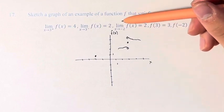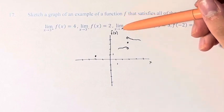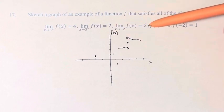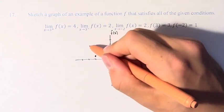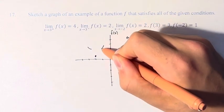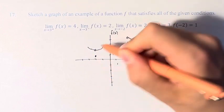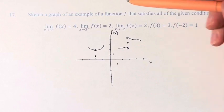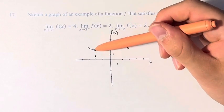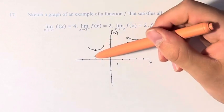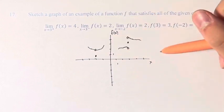We also have that the limit of the function as x approaches negative 2 is equal to 2. So from the left and the right, as we come closer and closer to this value, the value of the function approaches 2, but it's not actually equal to 2 at that point, it's equal to 1. So that's why we have another open circle.